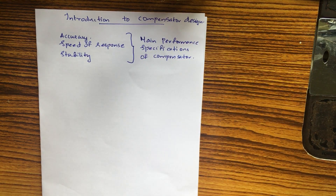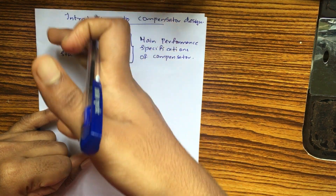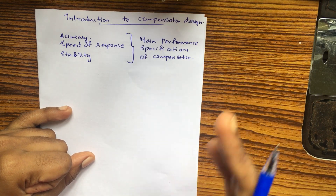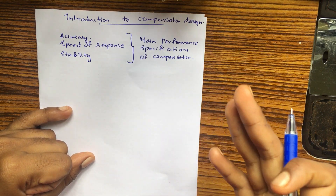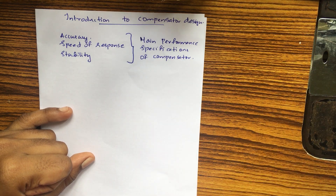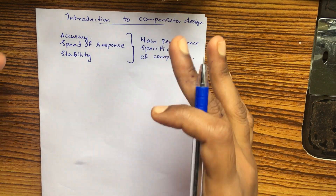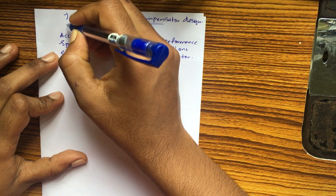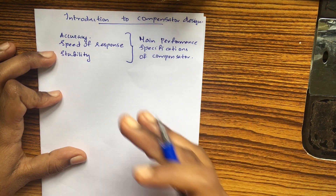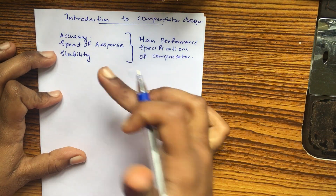In practical compensators, the main performance specifications must be met. We have an additional device called a compensator introduced into our system. In order to meet these performance specifications, we have to redesign our system by introducing this additional device, which is known as a compensator.